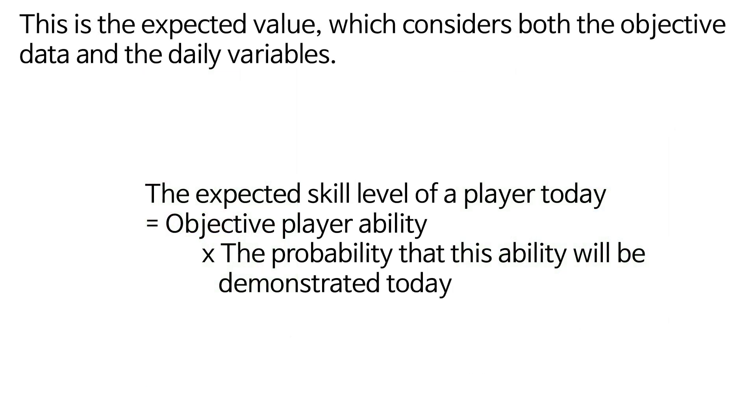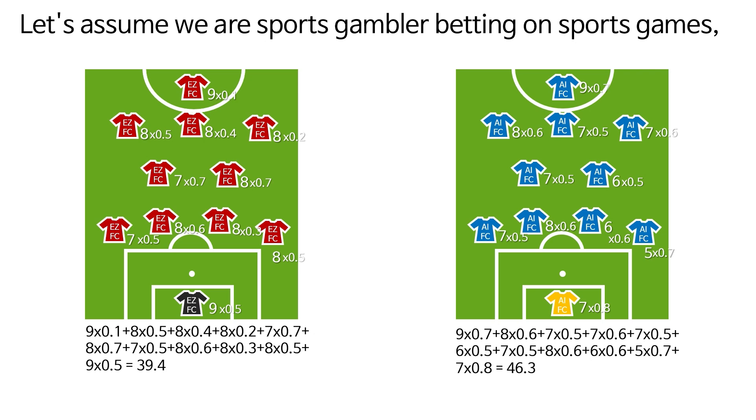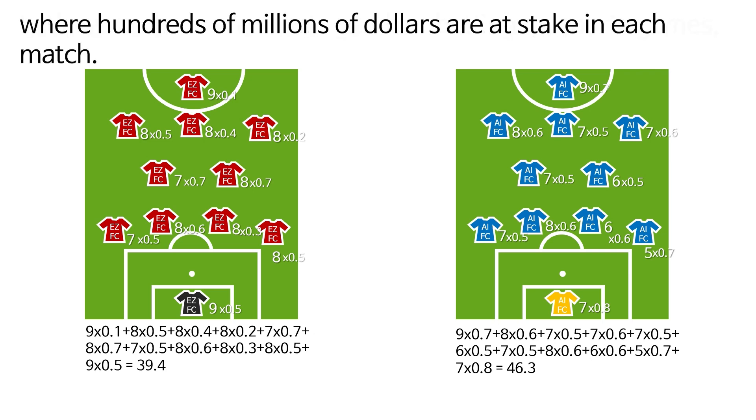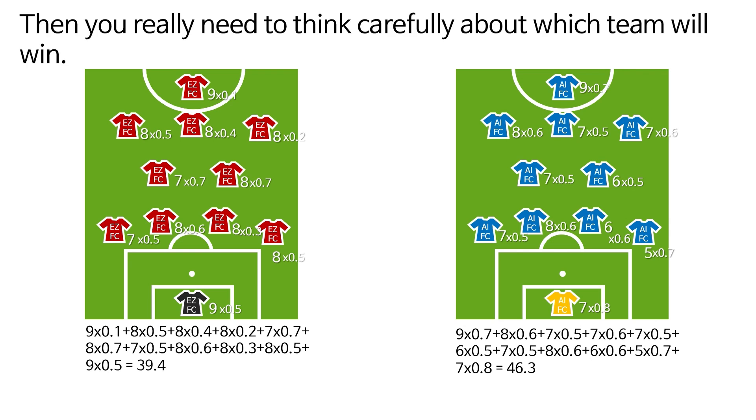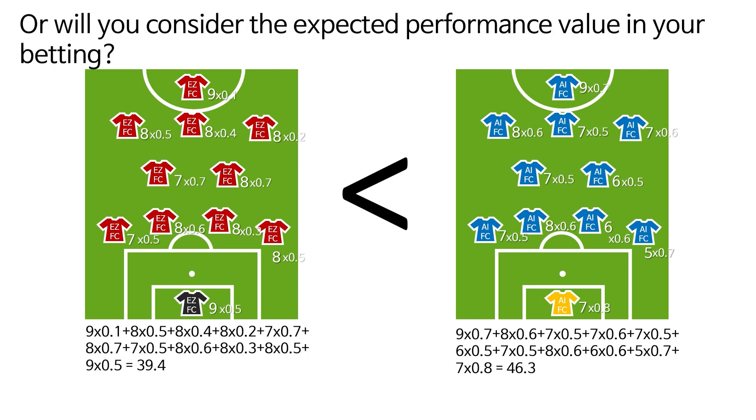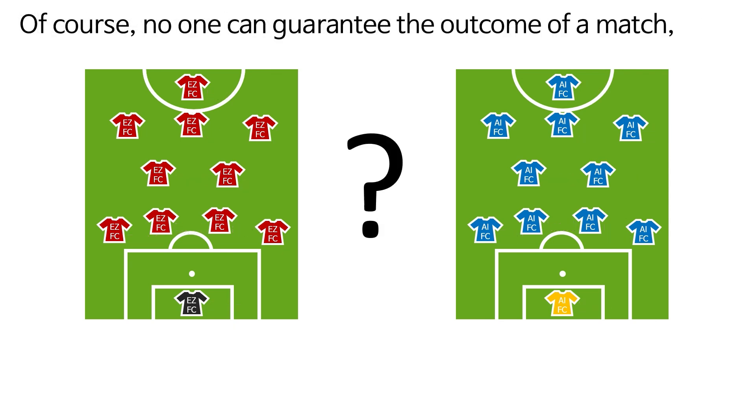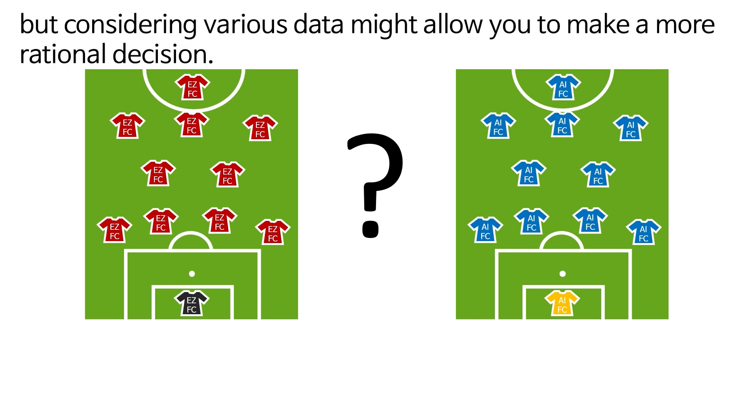This is the expected value, which considers both the objective data and the daily variables. So, why do we need this expected value? Let's assume we are a sports gambler betting on sports games, where hundreds of millions of dollars are at stake in each match. Then, you really need to think carefully about which team will win. Will you bet considering only the objective skill level? Will you consider the expected performance value in your betting? This can lead to a lot of deliberation. Of course, no one can guarantee the outcome of a match, but considering various data might allow you to make a more rational decision.